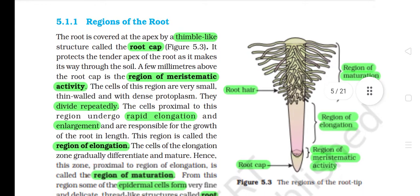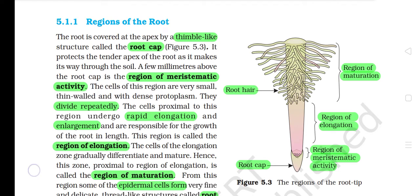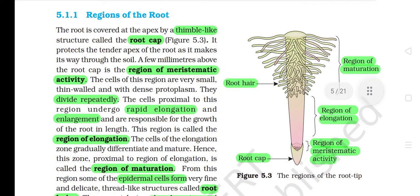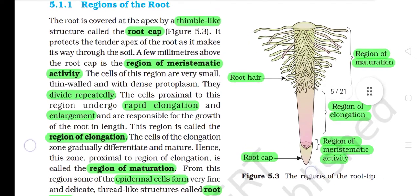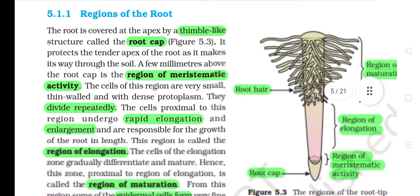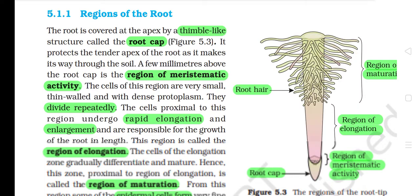5.1.1 Regions of the root. The root is covered at the apex by a thimble-like structure called the root cap. It protects the tender apex of the root as it makes its way through the soil. A few millimeters above the root cap is the region of meristematic activity. The cells of this region are very small, thin-walled and with dense protoplasm. They divide repeatedly. The cells proximal to this region undergo rapid elongation and enlargement and are responsible for the growth of the root in length.